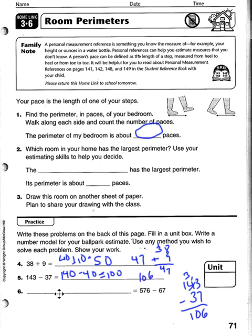The last problem is 576 minus 67. The ballpark estimate is 580 minus 70 equals 510. To do the actual math: 6 minus 7 does not work, so we borrow — the 7 becomes a 6, carry the 1 back, and 16 minus 7 is 9. Then 6 minus 6 is 0, and the 5 remains, giving an answer of 509 — very close to the ballpark estimate.